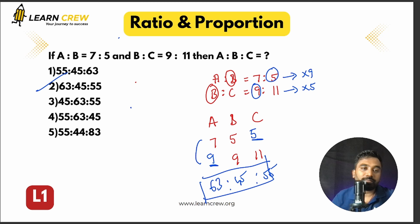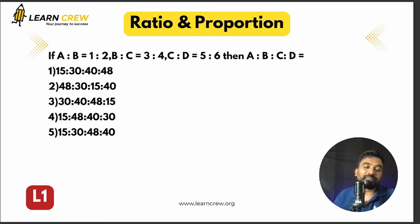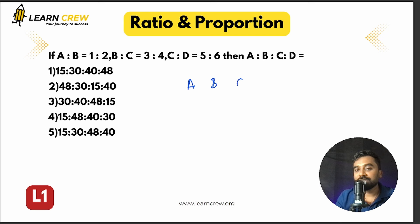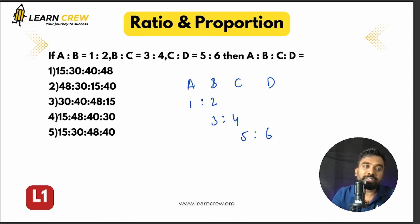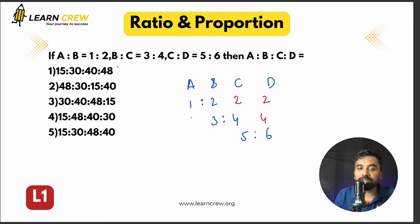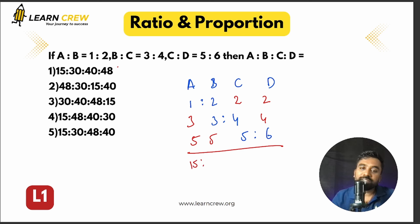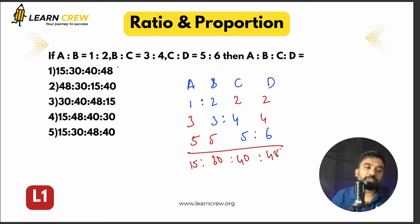Next question: a:b = 1:2, b:c = 3:4, c:d = 5:6. Find a:b:c:d. Write them out and use the same occupation method: 2 and 3 share, 4 and 5 share. Multiply through: 1×3×5 = 15, 2×3×5 = 30, 4×2×5 = 40, 4×2×6 = 48. Answer: a:b:c:d = 15:30:40:48.